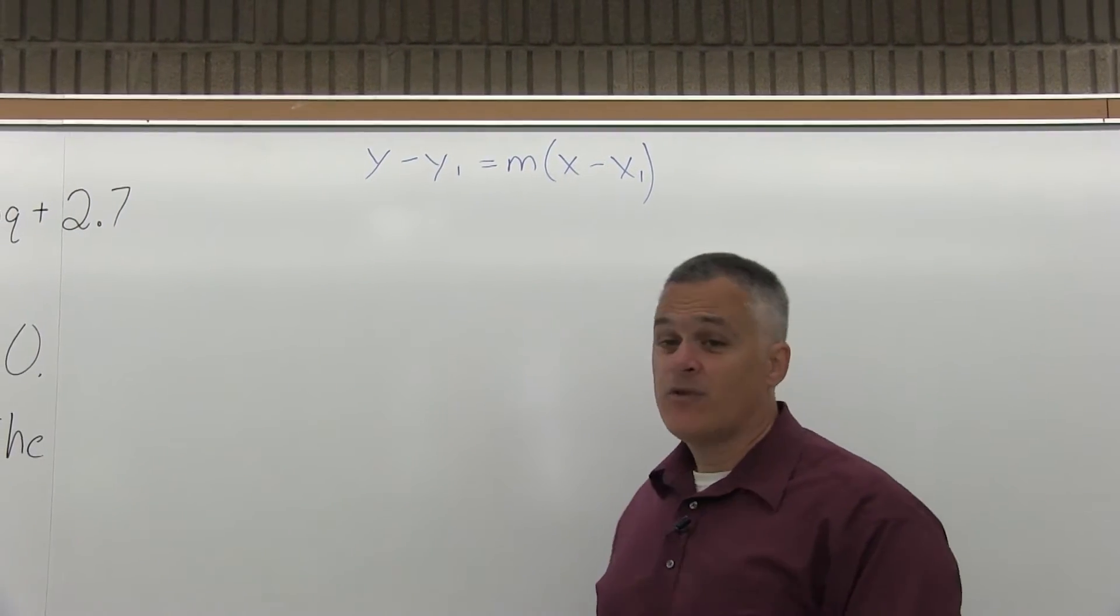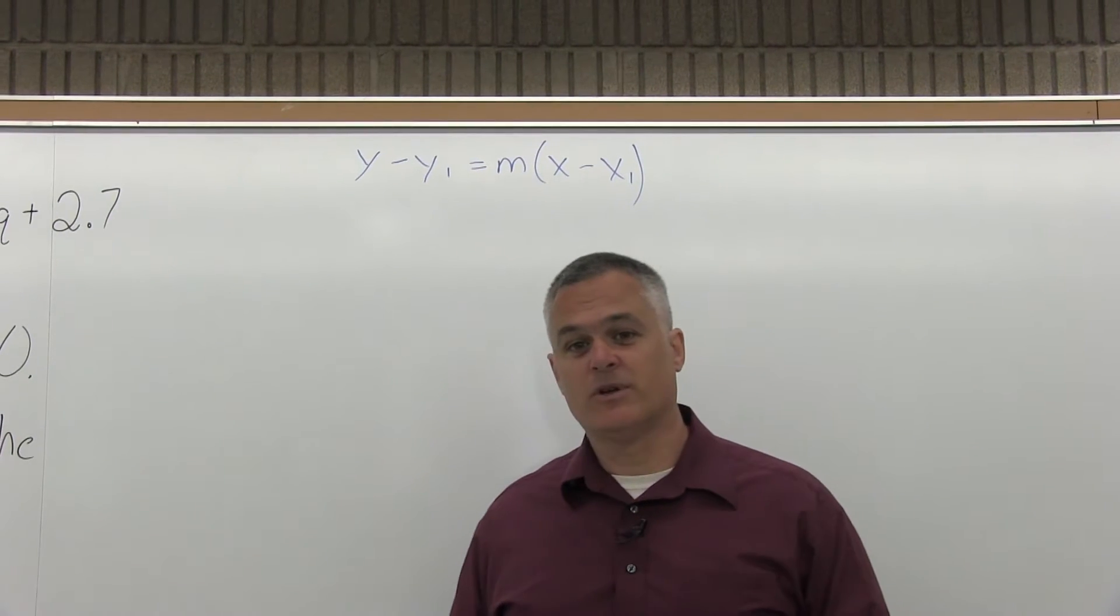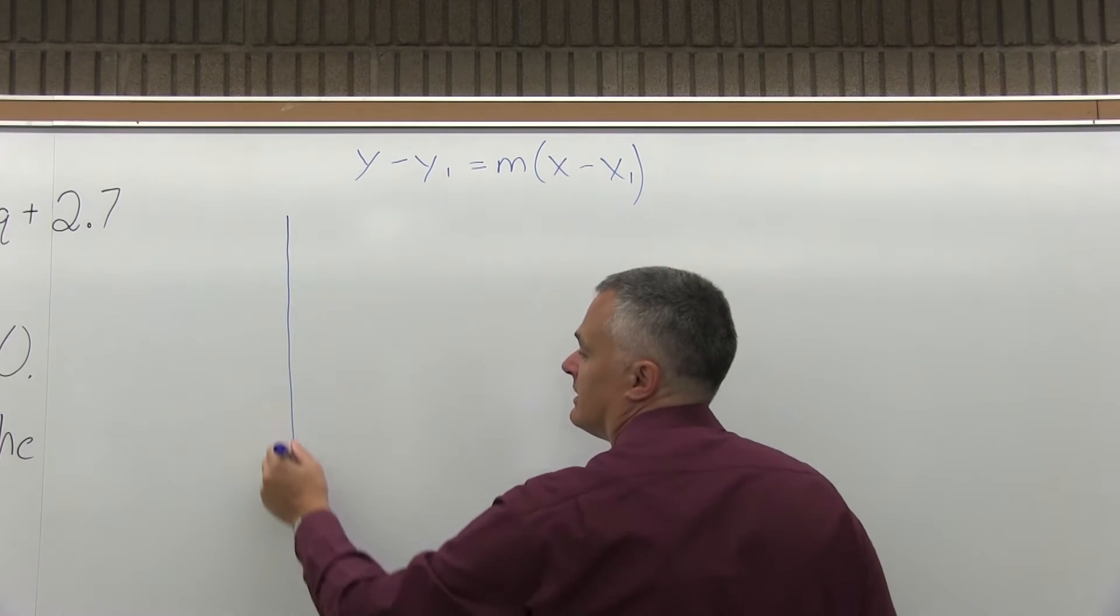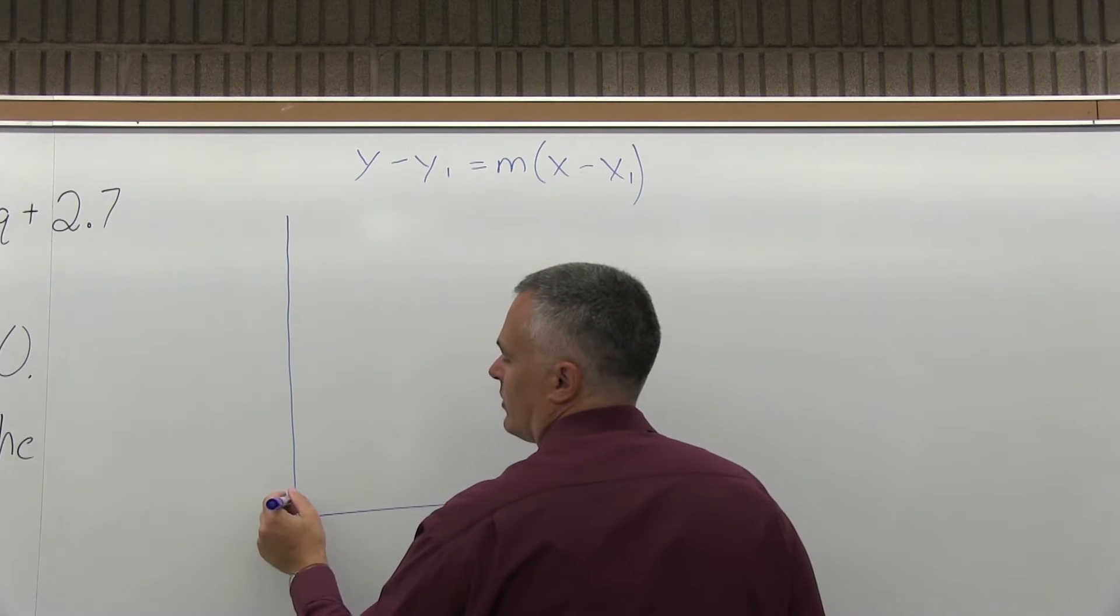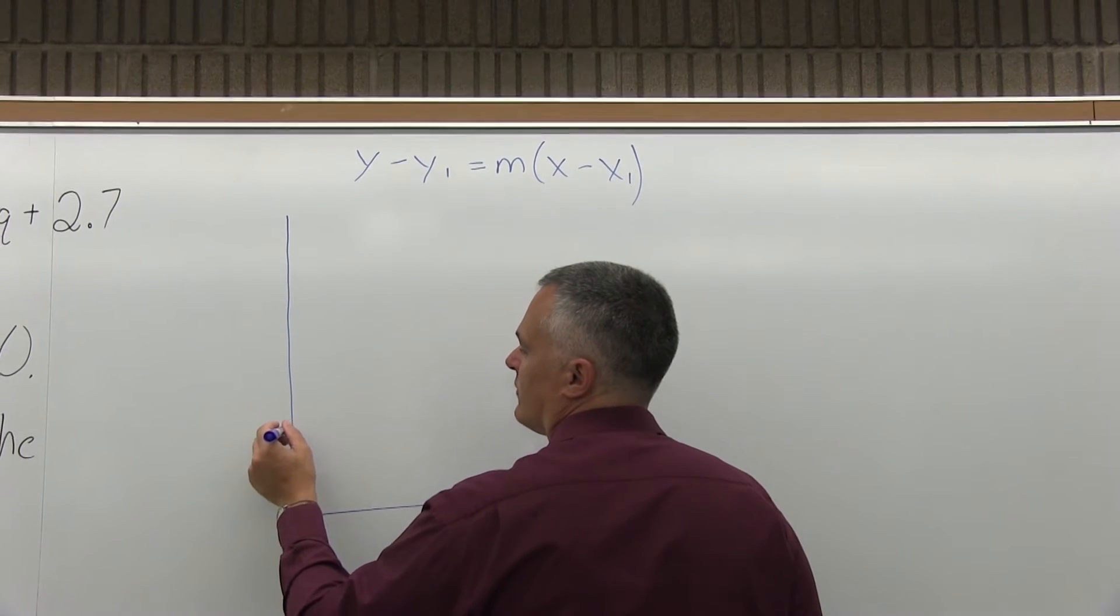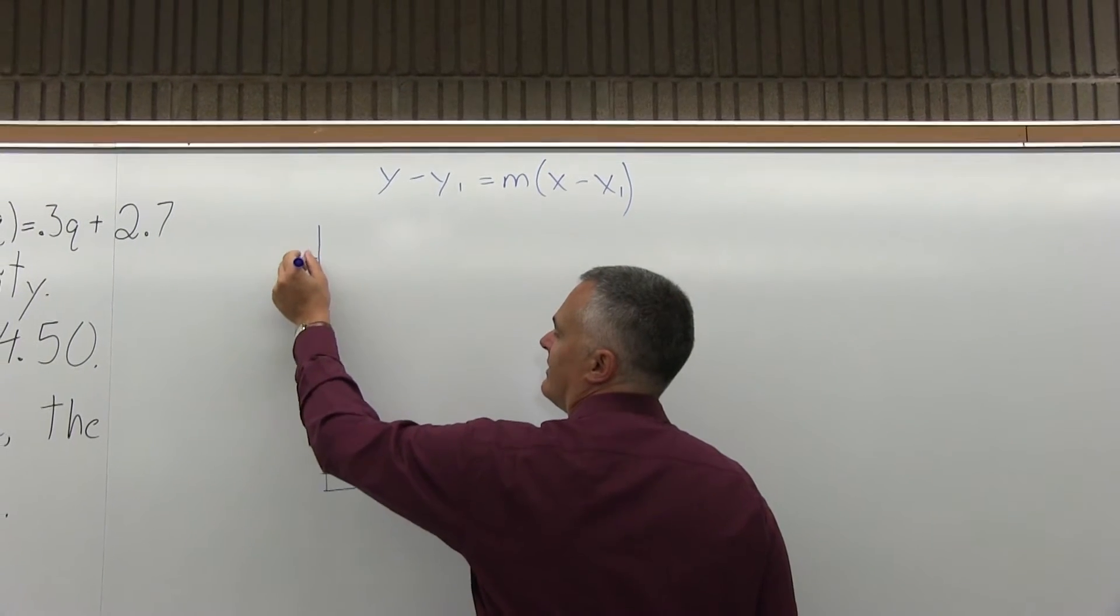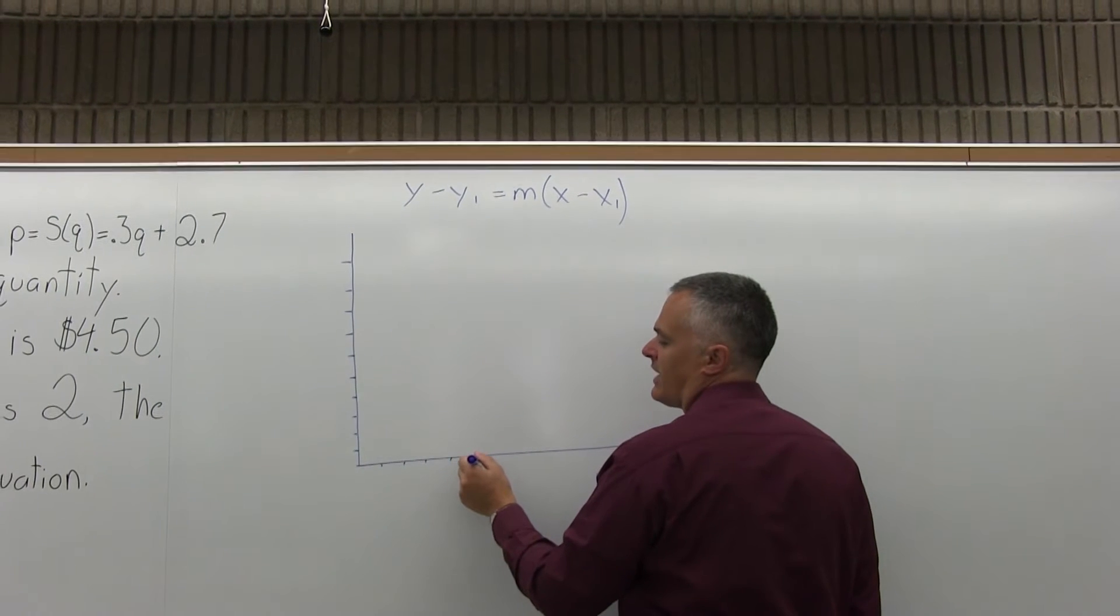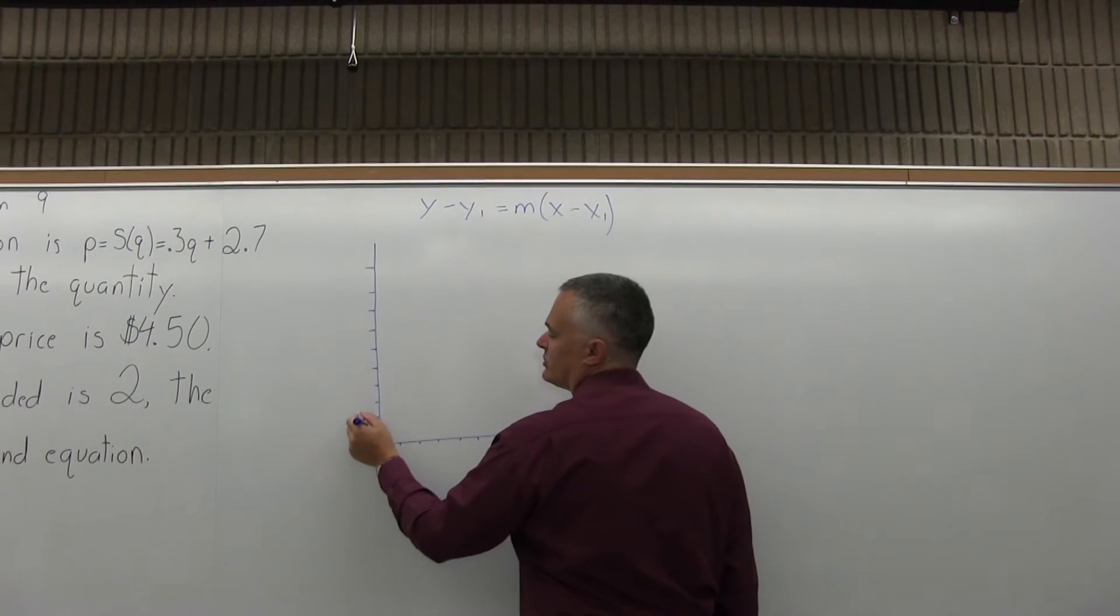It helps if I draw a graph. Let me make a quick graph. 1, 2, 3, 4, 5, 6, 7, 8, 9, 10. And the vertical axis: 1, 2, 3, 4, 5, 6, 7, 8, 9, 10. That should be enough.